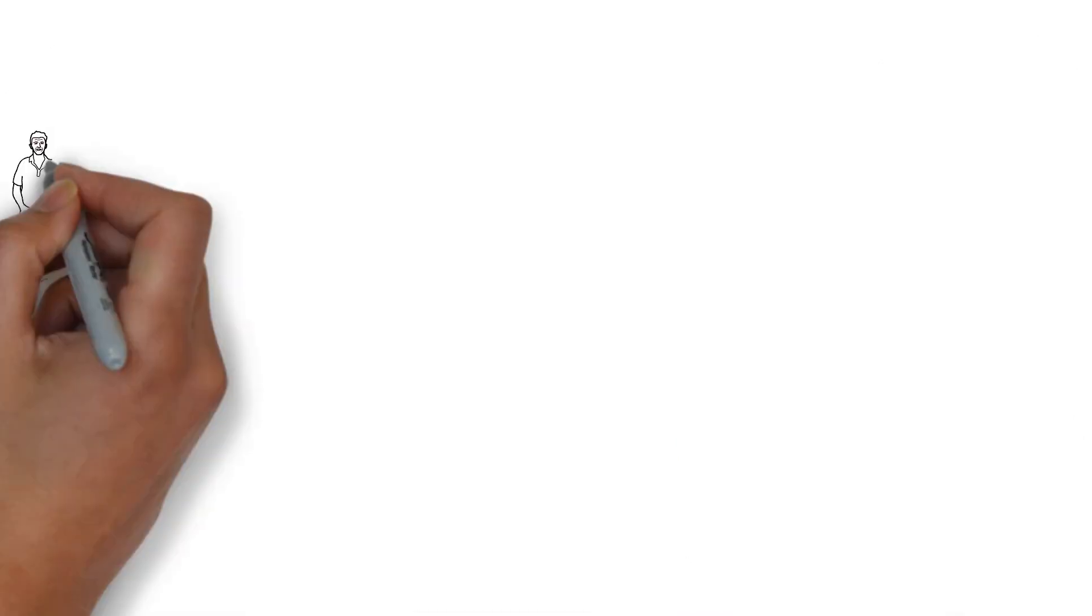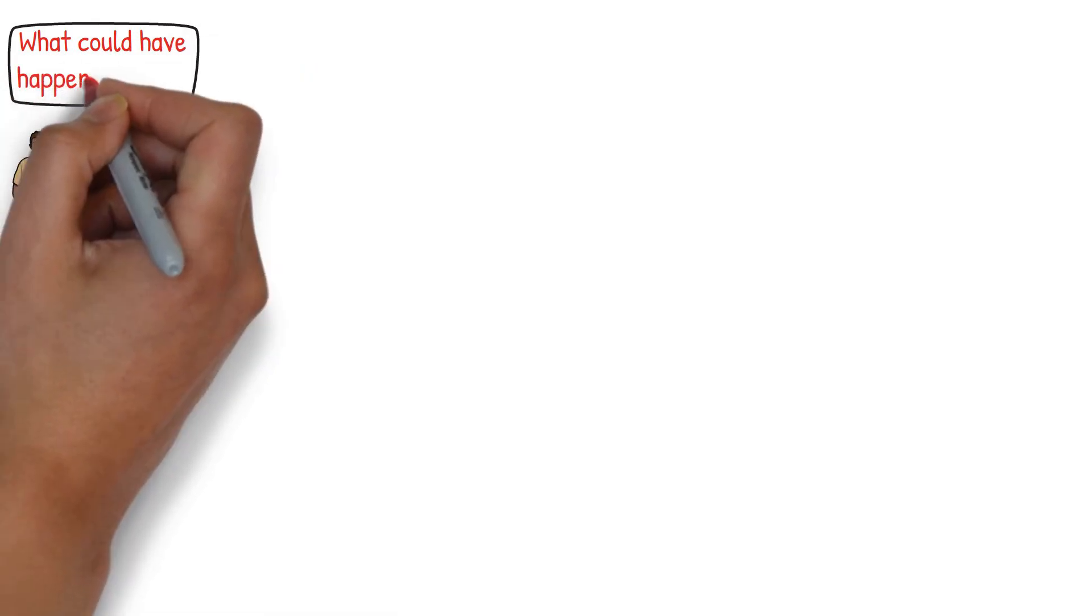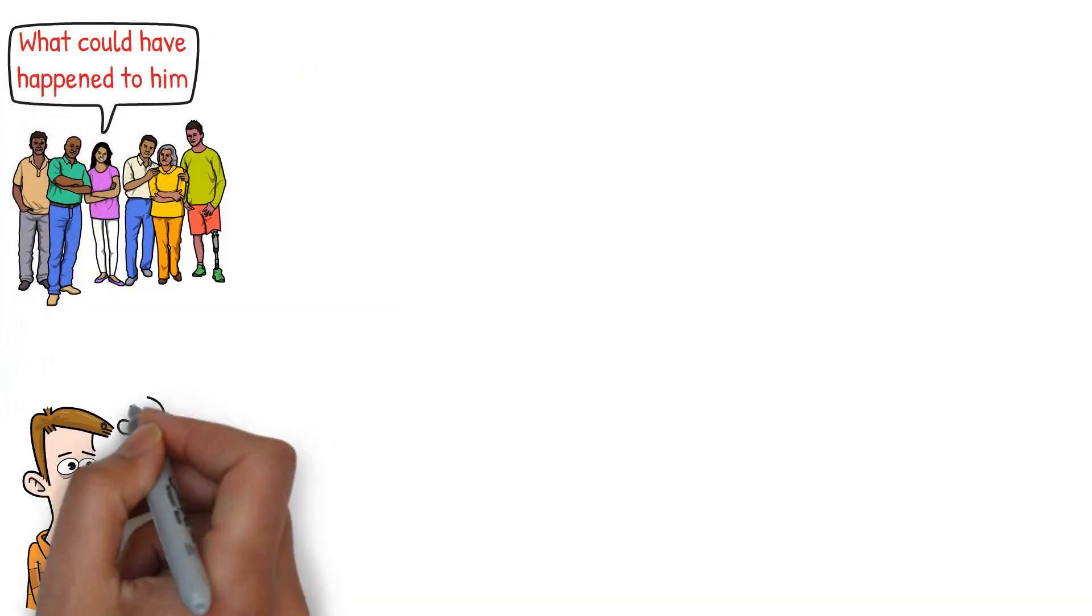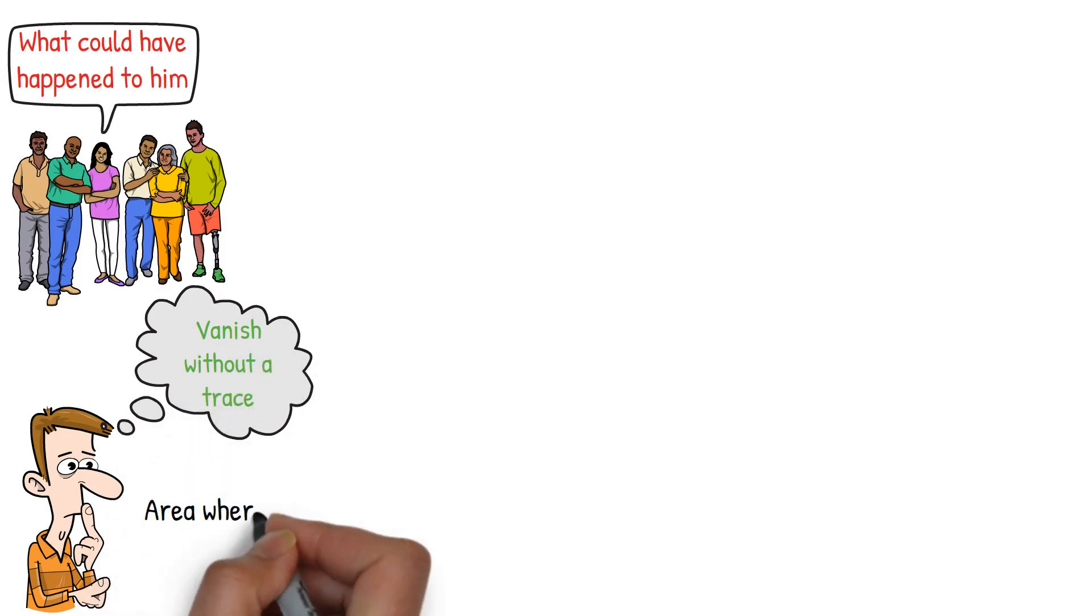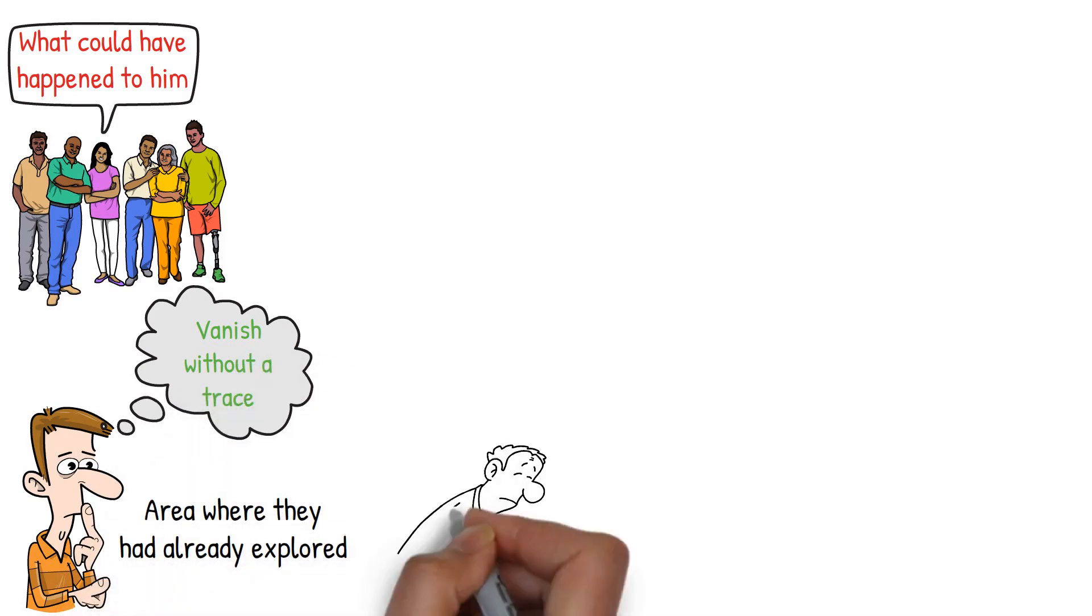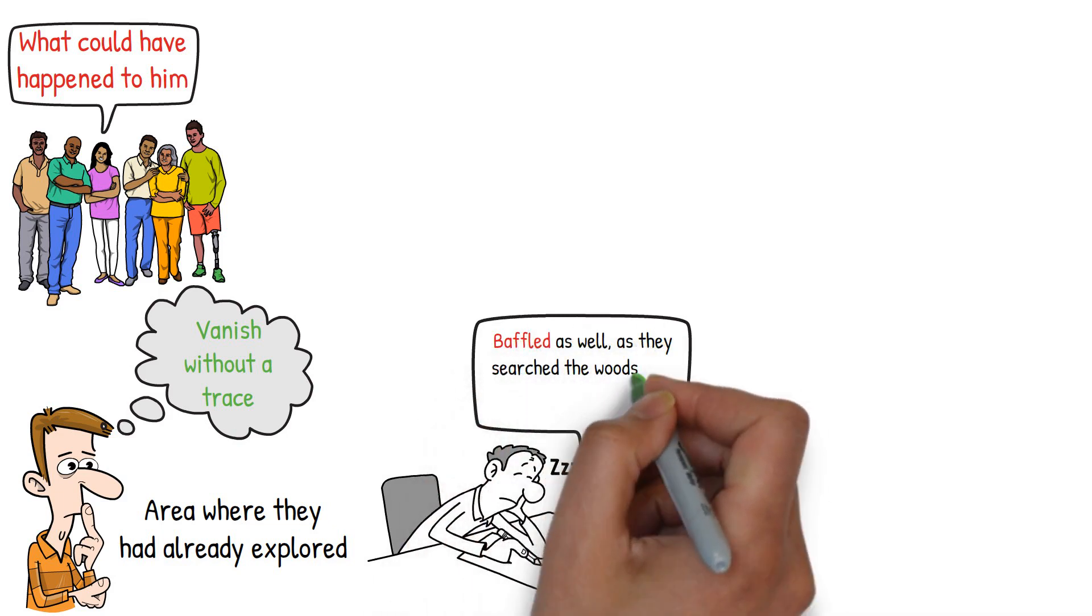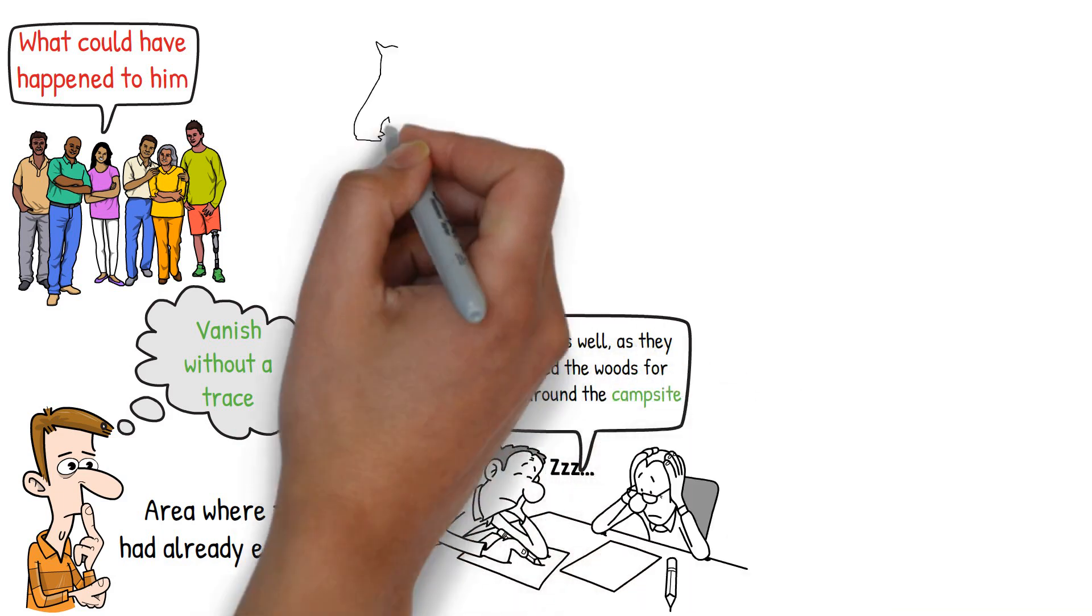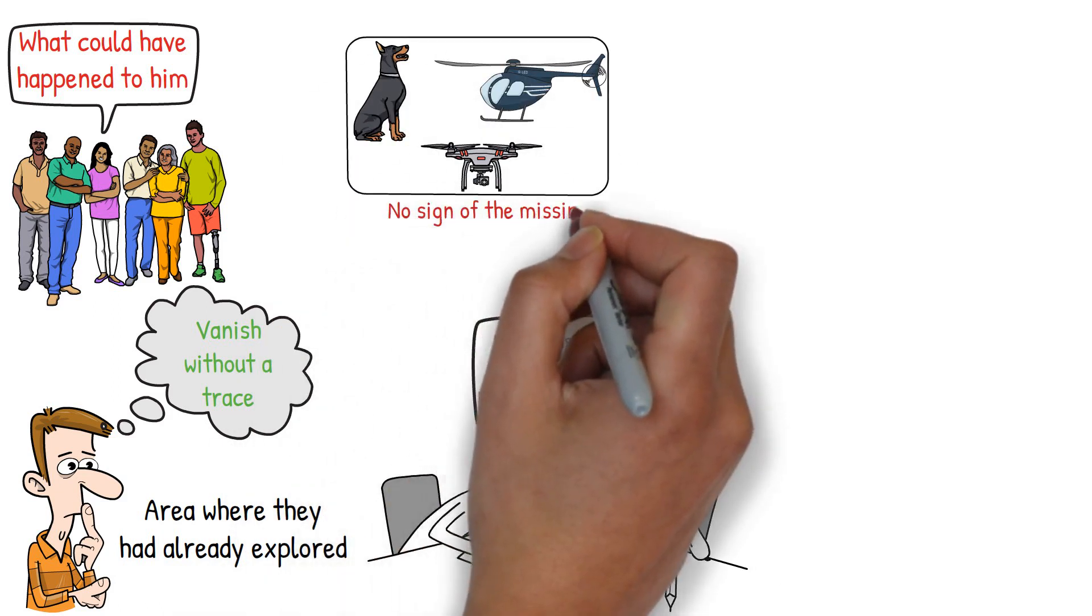As the search continued, the missing camper's friends and family were left to wonder what could have happened to him. They couldn't understand how someone could just vanish without a trace, especially in an area where they had already explored. The authorities were baffled as well, as they searched the woods for miles around the campsite. Despite using search dogs, helicopters, and drones, no sign of the missing camper was ever found.